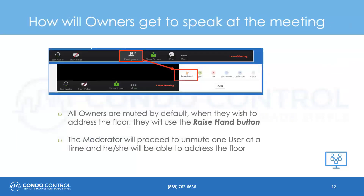How will owners get to speak at the meeting? All owners who enter the meeting will be automatically muted and can only be unmuted by the moderator. If an owner would like to speak, they would need to use the raised hand button, at which point the moderator will unmute them and they may address the floor.